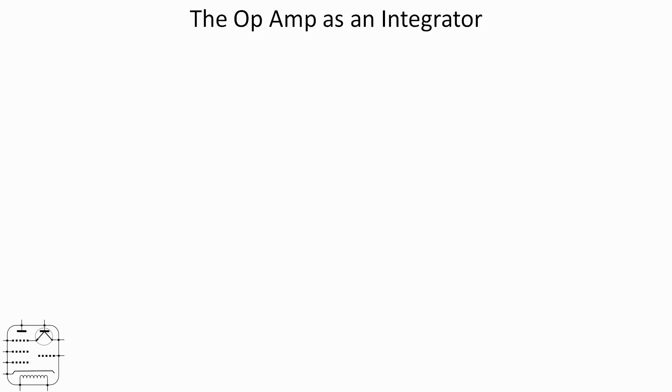The first of these two circuits is the op-amp as an integrator, so the input is going to be integrated at the output. Here's the general arrangement: input on the left through a 10k resistor, the positive input of the op-amp is tied to ground, and we've got a feedback 10 megaohm resistor and a 1 microfarad capacitor between the output and the inverting input.